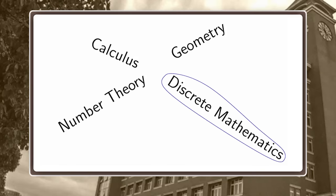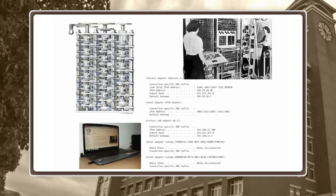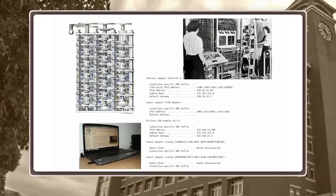Finally, discrete math really got going in the second half of the 20th century, and the technology that motivated people to study it was, of course, the computer. If you think about how the earth revolves around the sun, it's a continuous motion — that's why we need calculus. On the other hand, computers move in discrete steps. To understand how computers process and structure information, you need discrete math.